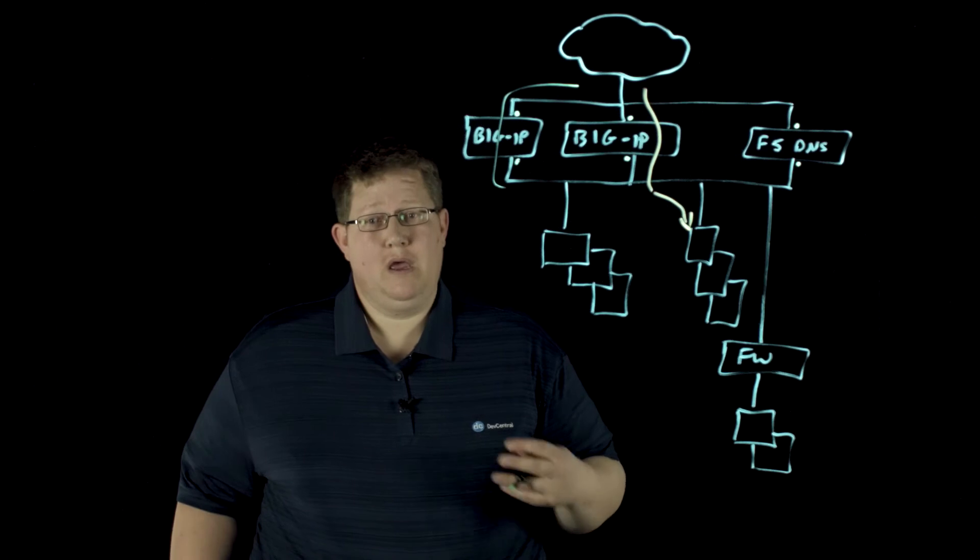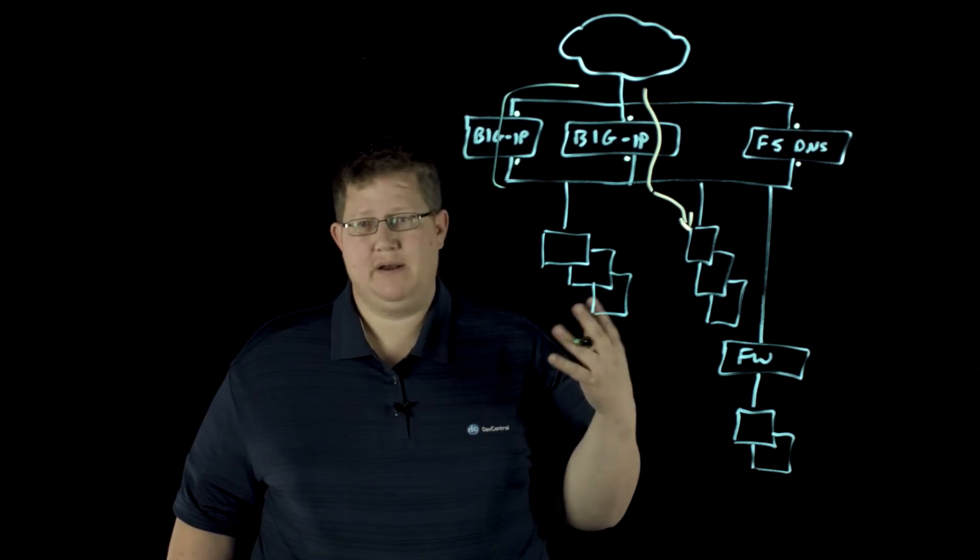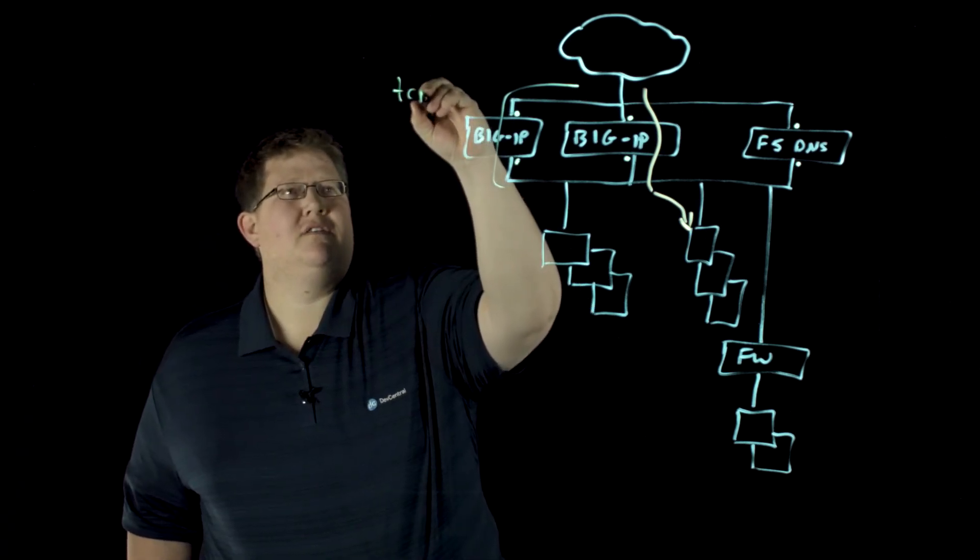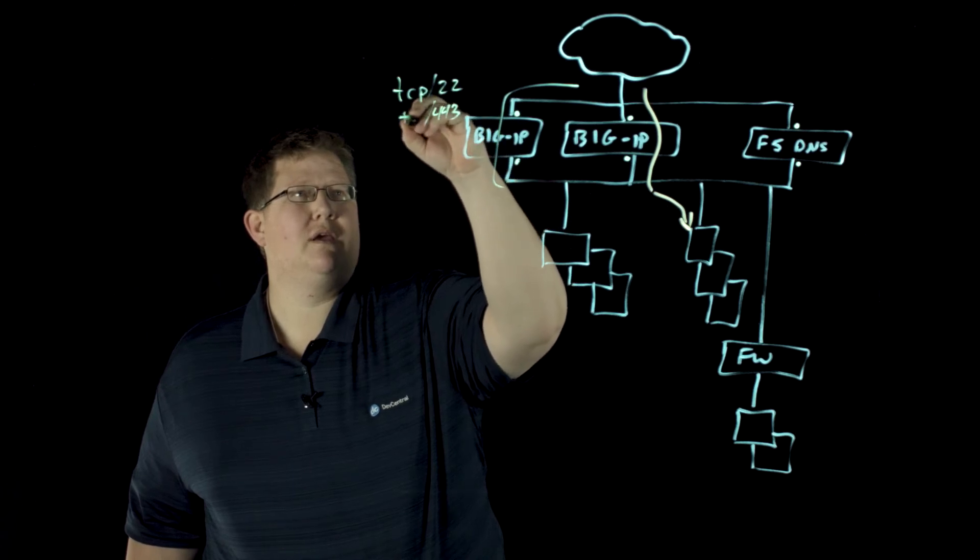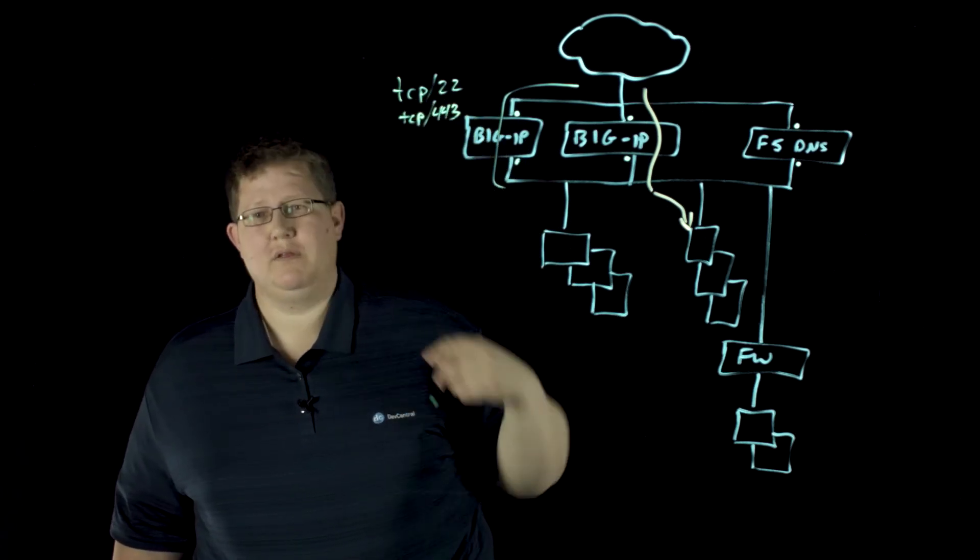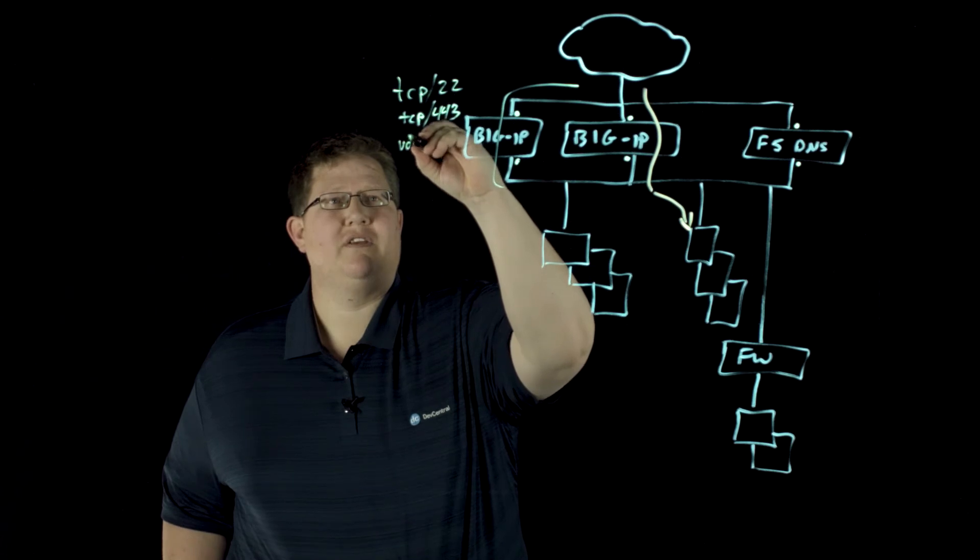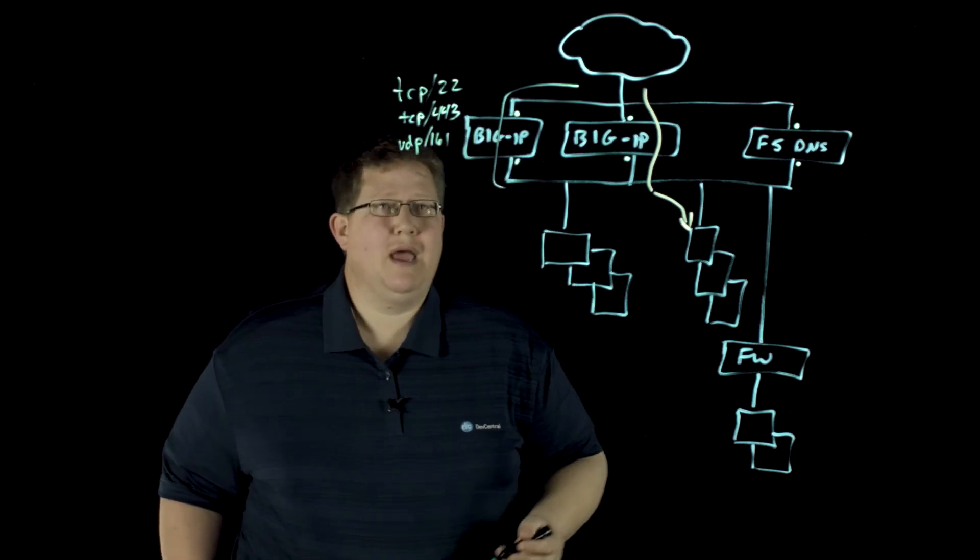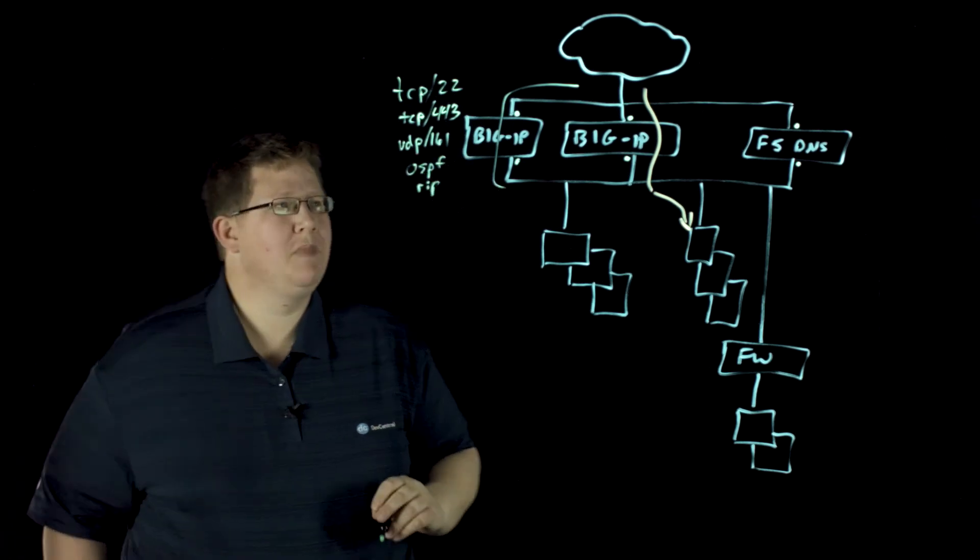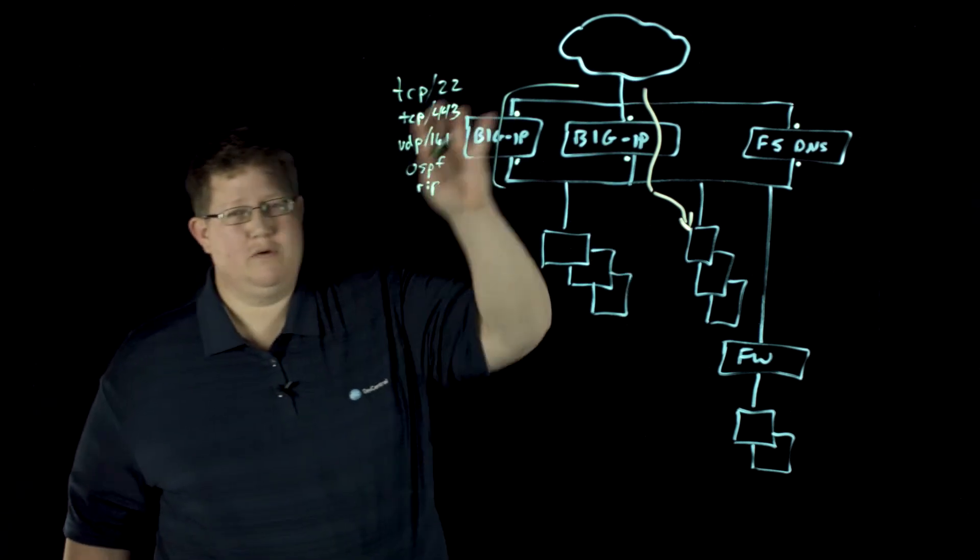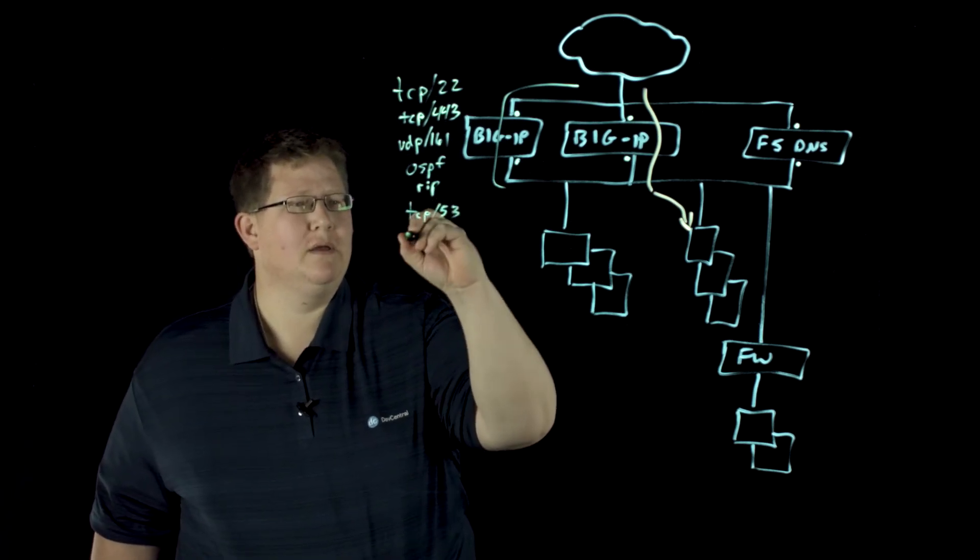There is, by default, a list of ports, TCP and UDP ports and protocols, that are acceptable. Things like TCP 22, which is SSH of course, and then 443 so you can get to the big IP UI, and then like UDP 161 which is SNMP. There's a long list of ports. Actually OSPF and RIP are in that default list as well. And so if you're running routing protocols in the big IP, those will be allowed to route in. I think DNS is on there as well, so TCP and UDP 53 are in that list.